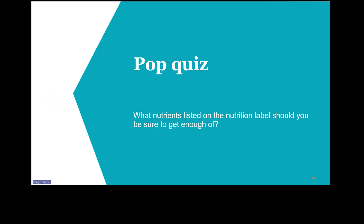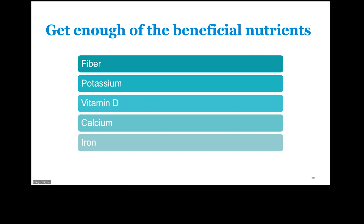What nutrients on the nutrition label should you be sure to get enough of? If we choose to eat more fruits and veggies, we'll get more fiber, potassium, vitamin D, calcium, and iron. We need those to maintain good health and help reduce your risk of certain health problems like osteoporosis and anemia.